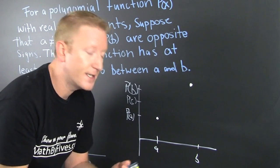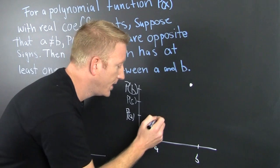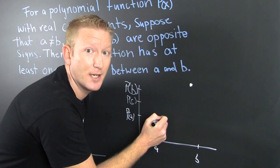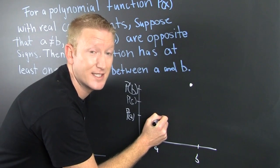Why? Because this is a polynomial, if I'm connecting the dots, I can't pick up the pen. Why? Because it's continuous.